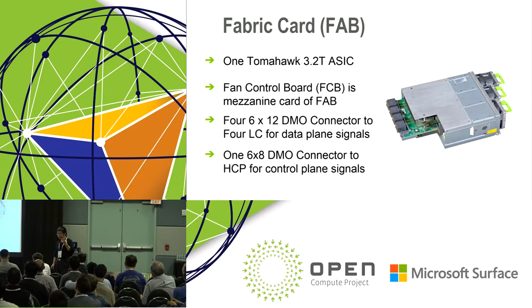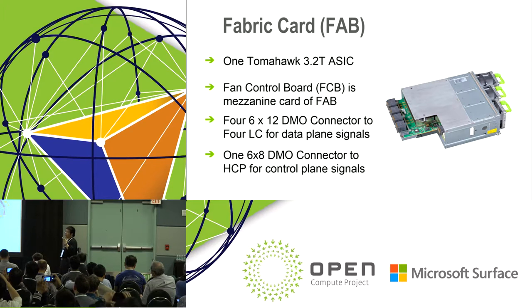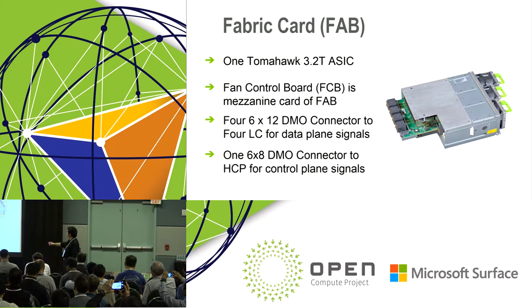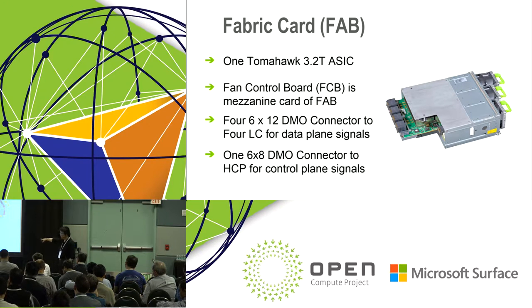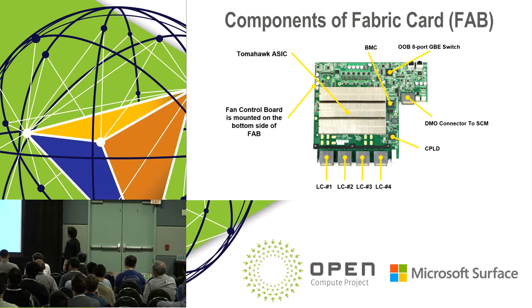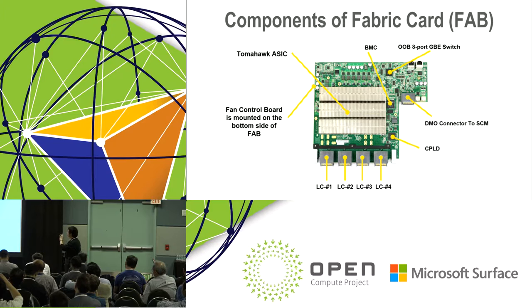Fabric card: the fabric card has one switch element, one switch ASIC. It also has a fan control board FCB as a mezzanine card. On the left side are four orthogonal direct connectors that connect to the line cards. On the middle-left and bottom side are the control plane VCP connectors. The PCB of the fabric card shows the switch ASIC, CPU I/O, DML connector, and BMC. There is also a management OOB switch for management connections.